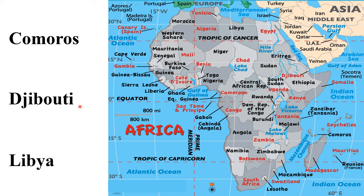In Africa, there are three countries with no rivers. The first one is Comoros, an island country in the Indian Ocean with no permanent rivers. The second country is Djibouti, a small country which shares borders with Eritrea, Somalia, and Ethiopia, and it has no permanent rivers. Libya is the second largest country with no rivers, found in North Africa, and it has no permanent rivers.